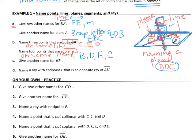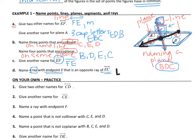Part C says give another name for segment EF. The partial line with no arrows means we're talking about a segment. The only other name we could give that is FE — and I will be looking for the proper notation, meaning you have the line over the two capital letters. Part D: name a ray with endpoint E that is an opposite ray of EC. We start at E, and we need to go the opposite direction from the ray called EC, which means heading toward D — so that's ray ED.